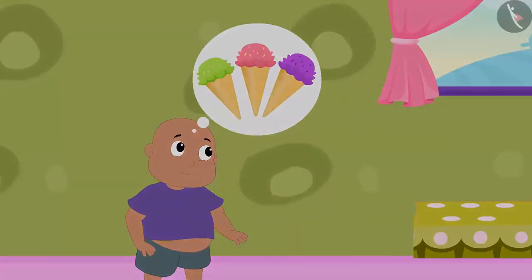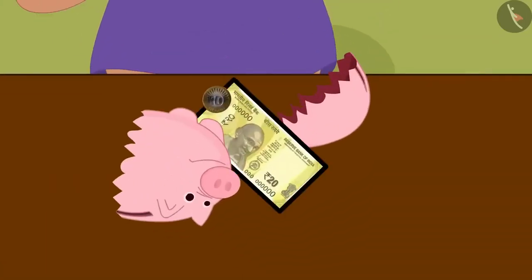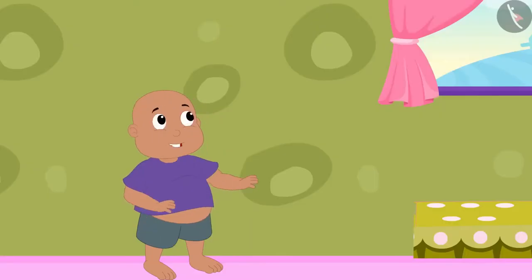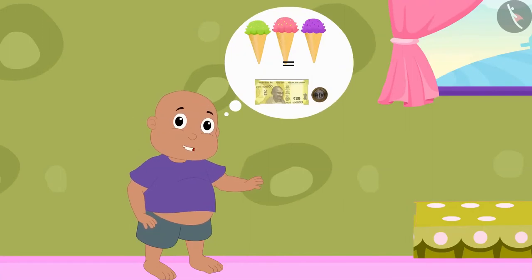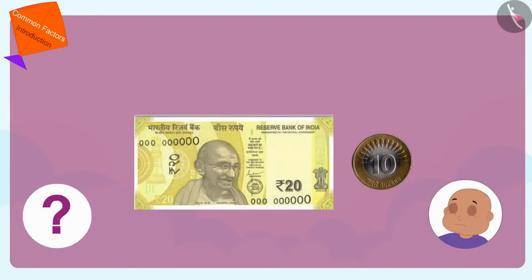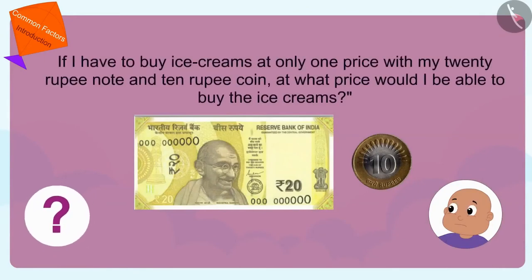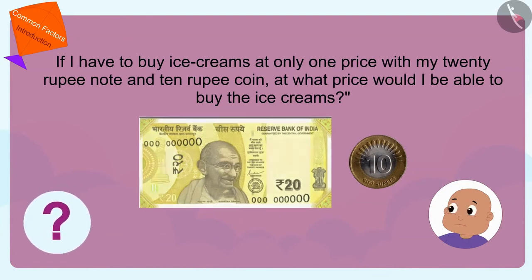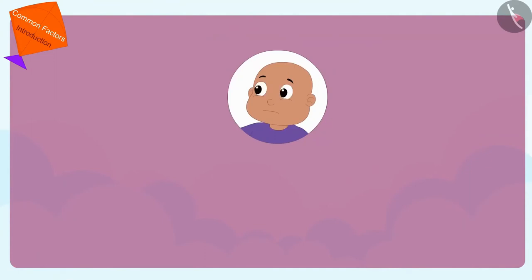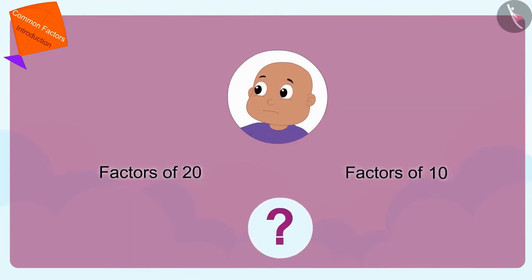In this video, we shall see what are common factors. Bablu loves ice cream. He broke his piggy bank today and got a twenty-rupee note and a ten-rupee coin. Bablu decided that he would buy ice cream from his money in such a way that no money was left. Bablu is thinking: if I had to buy ice creams at only one price with my twenty-rupee note and ten-rupee coin, at what price would I be able to buy the ice cream? Children, can you tell me how Bablu can find the answer to this question?